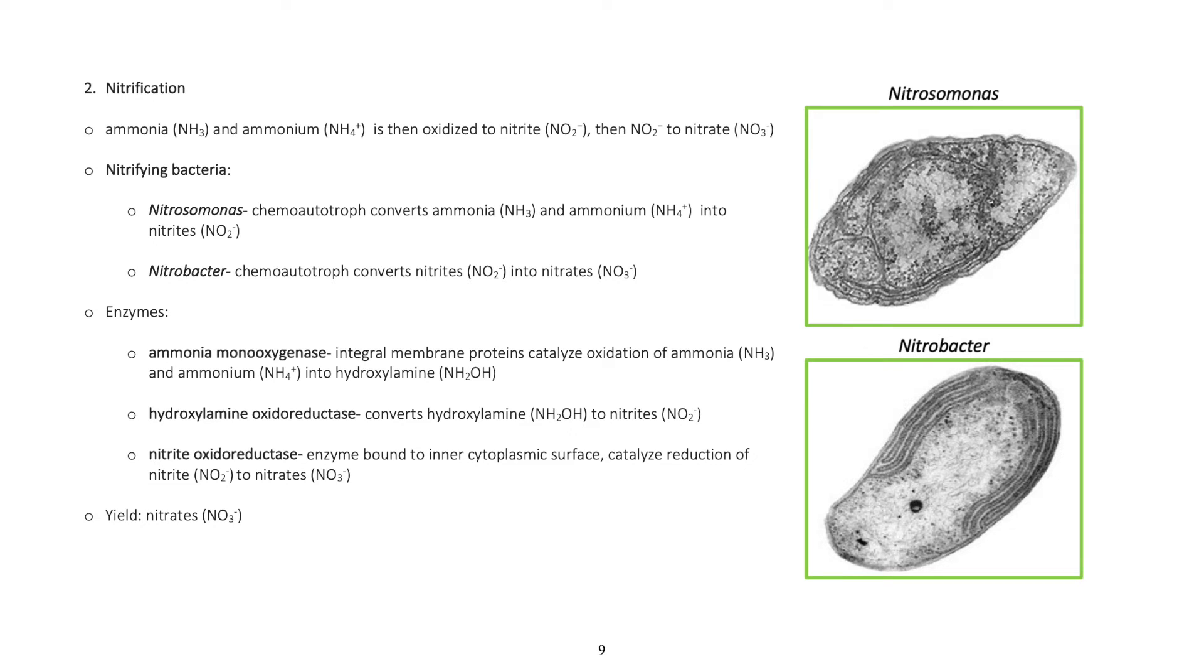Nitrifying bacteria: Nitrosomonas (chemoautotroph) converts ammonia and ammonium into nitrites. Nitrobacter (chemoautotroph) converts nitrites into nitrates.